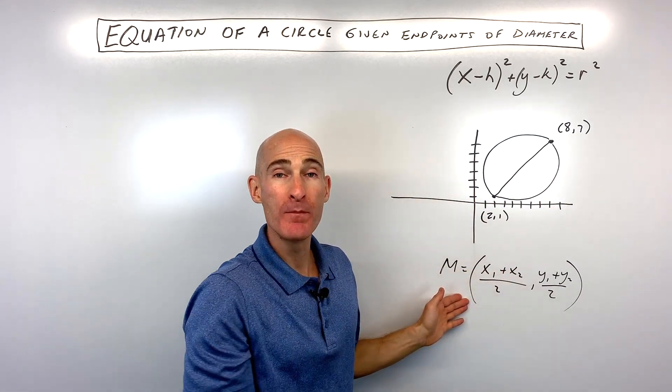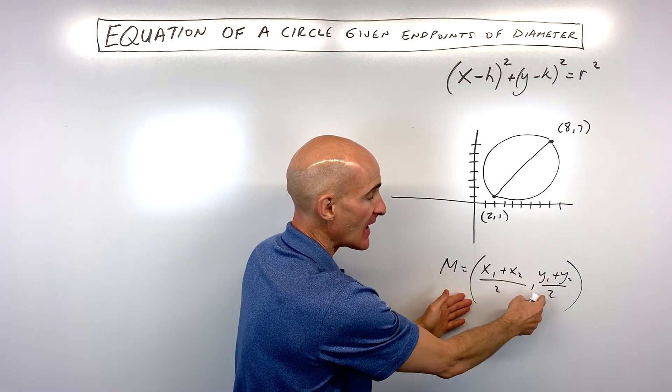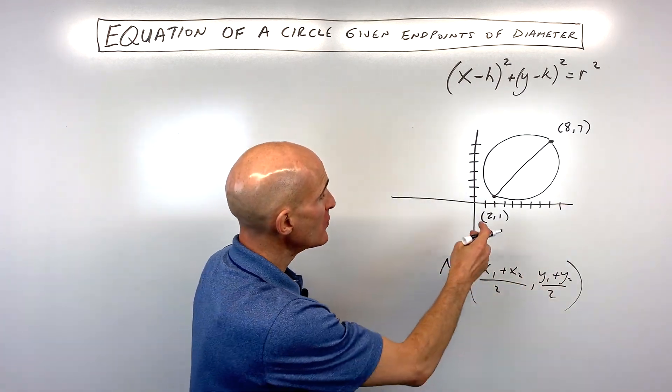Well, we're going to want to use our midpoint formula, which is this one down here, and you can see that it's an average of the X's and an average of the Y's. So let's go ahead and do that.